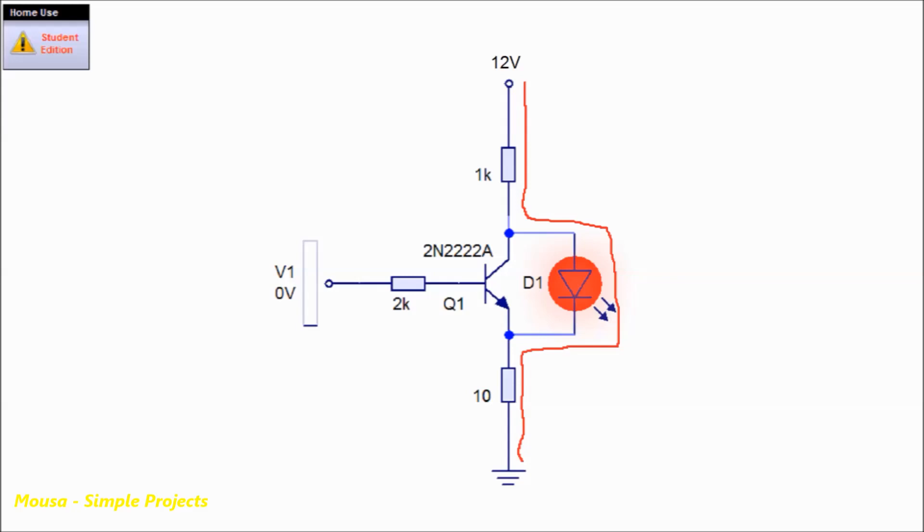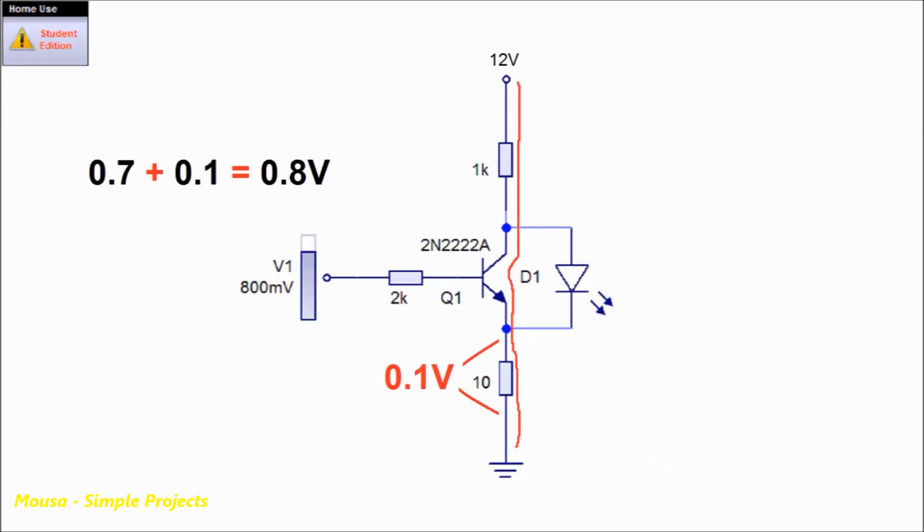When the transistor turns off, current runs through the LED and the LED lights up, with some voltage drop across this resistor. Let's say the LED is drawing 10 milliamps of current, so the voltage drop on the emitter is 0.1 volts. So the base needs 0.8 volts to turn off the LED. The voltage across the LED becomes about 0 volts and the LED turns off.